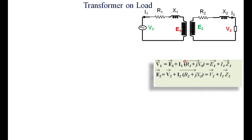Similarly, looking into the secondary winding, the induced voltage E2 = V2 + I2R2 + jI2X2 = V2 + I2(R2 + jX2). That is, I2 multiplied by the secondary impedance gives the impedance drop. If the impedance drop is added to V2, then what you get is E2. Therefore, E2 = V2 + I2Z2.